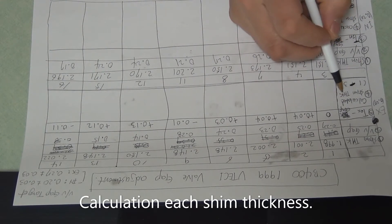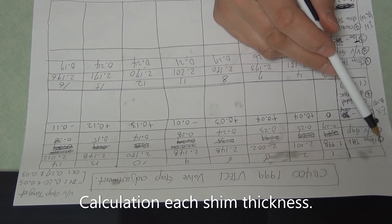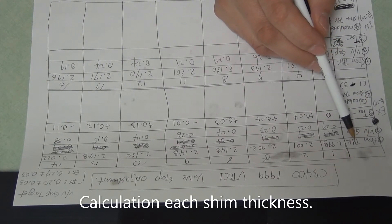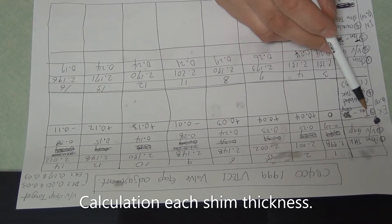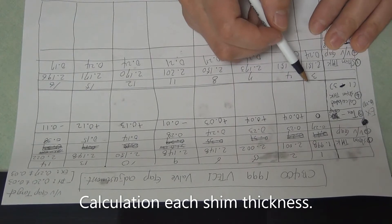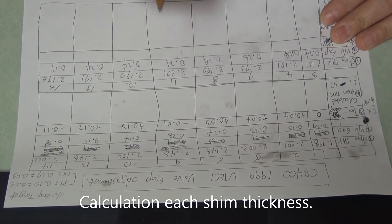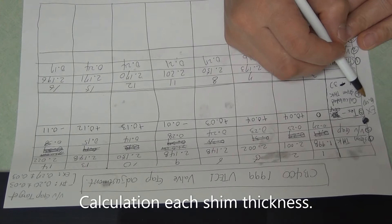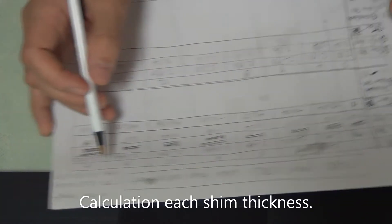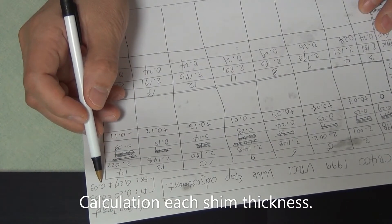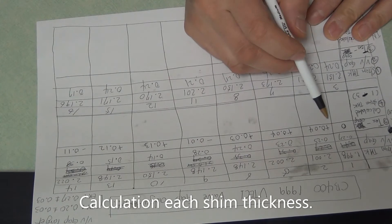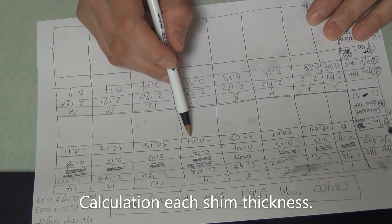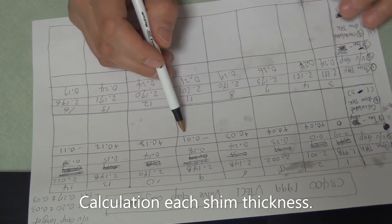Calculated shim thickness, number 1. Number 1 minus number 3, i.e. shim thickness minus calculated value. This means first for exhaust valve, the target gap is 0.27, 0.27 plus minus 0.03. So this number, valve number 1, 6, 9...